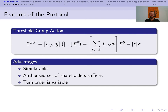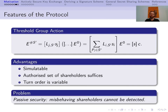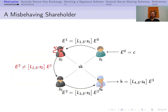Their approach has two nice features: you do not need all shareholders, but only an authorized set, and the turn order is not fixed but can be arranged in any suitable way. The problem, however, is that their protocol is only passively secure. That is, a misbehaving shareholder cannot be detected, because the share is obviously unknown to all other parties, and it cannot be computed from the input and output.